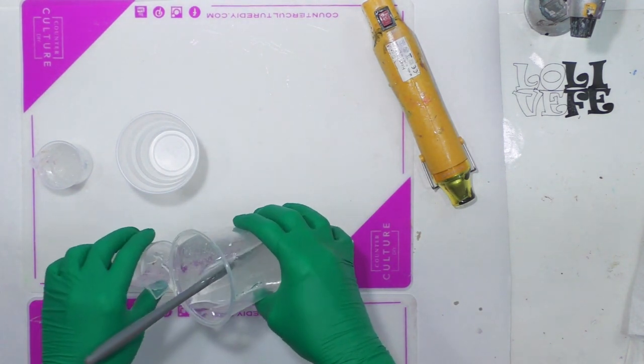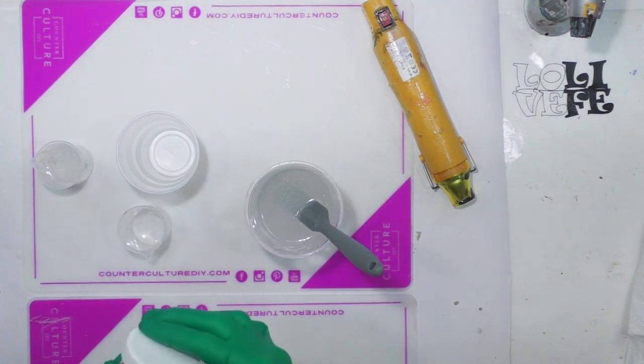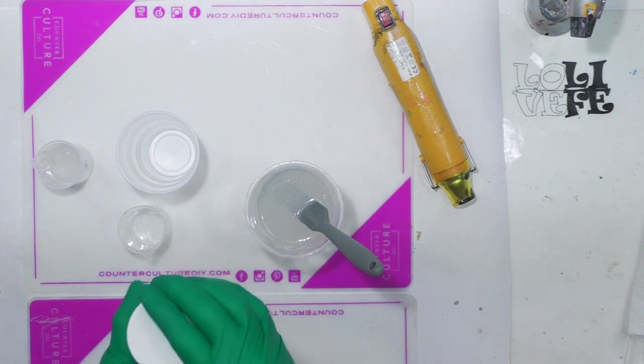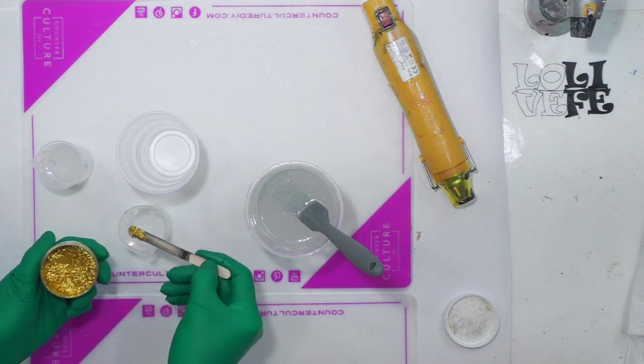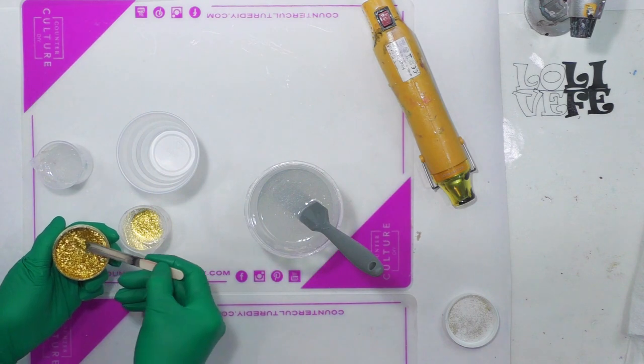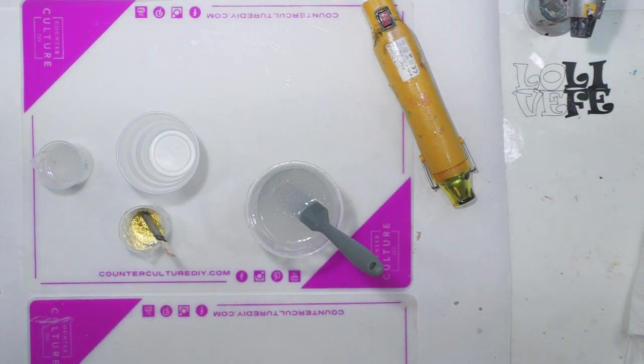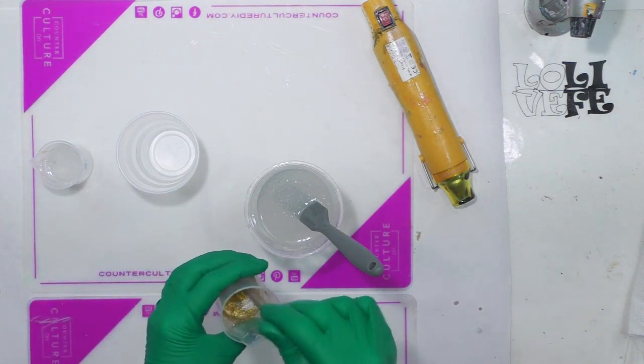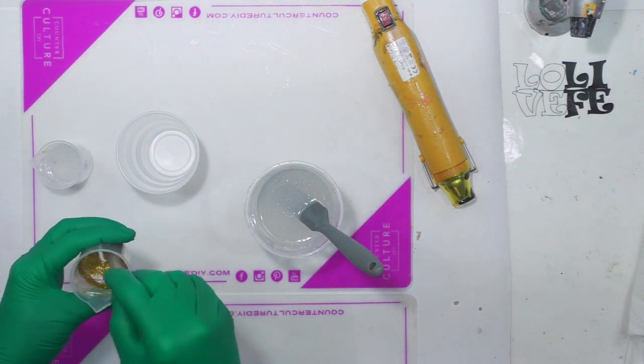I'm going to add some Advanced Metallics calm ultra gold brass to that. It's kind of like little, it's not glitter and it's not flakes, just got some texture to it, super shiny. So just a little bit of that.